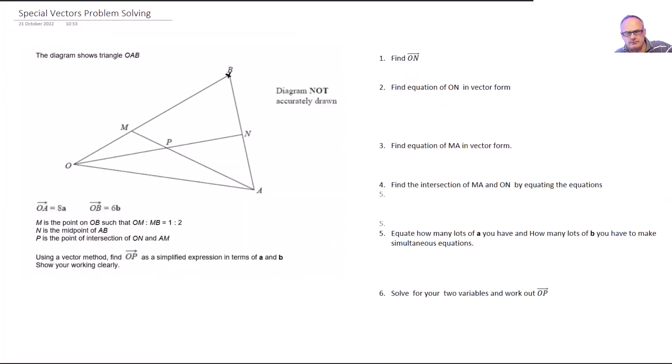Here we have a really tricky vectors problem. To do this you need to make sure you understand how to prove that two vectors are parallel and to also understand when points are on the same line in vector form. If you don't know that, go back and have a look at the videos that I've done on proving that vectors are parallel and also that points lie on a straight line.